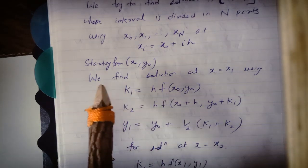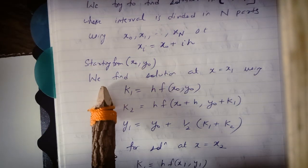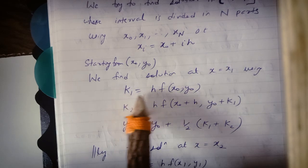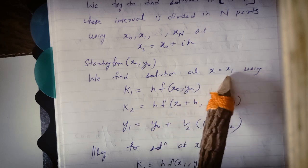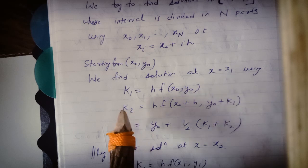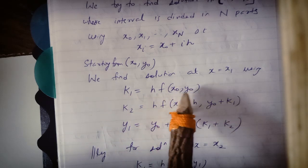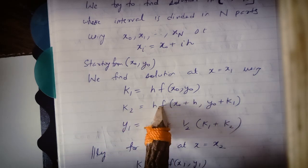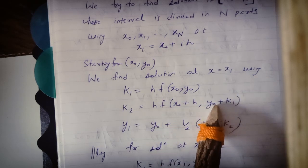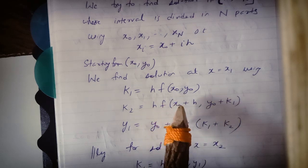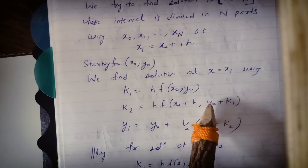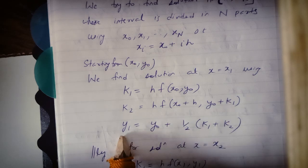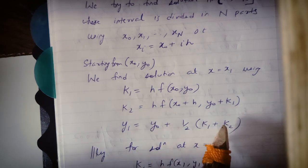Now here we have y of x0. If we have to find the solution at x equals x1, first we have to solve k1. What is k1? k1 is h into f of x0, y0. Then k2: k2 will be h into f of x0 plus h, y0 plus k1. It means h into value of the function at x0 plus h, and y0 plus k1 — k1 we have solved already. Finally, y1 will be y0 plus half of k1 plus k2.